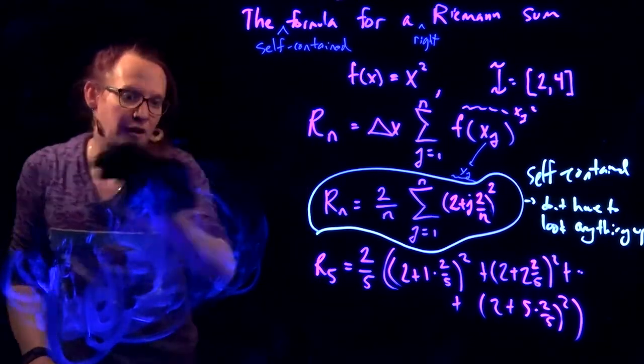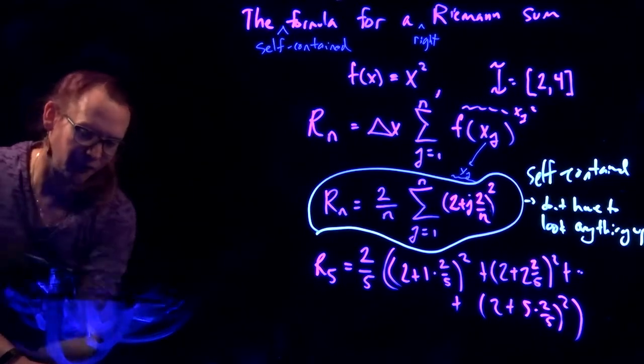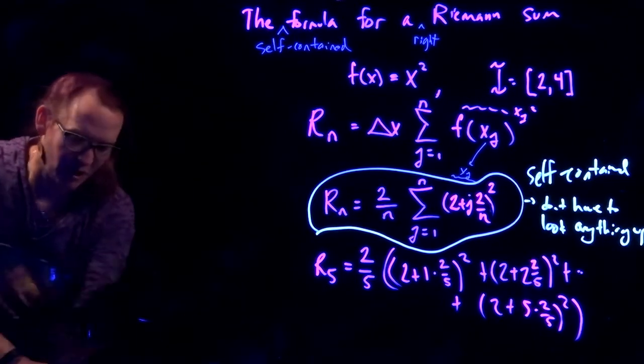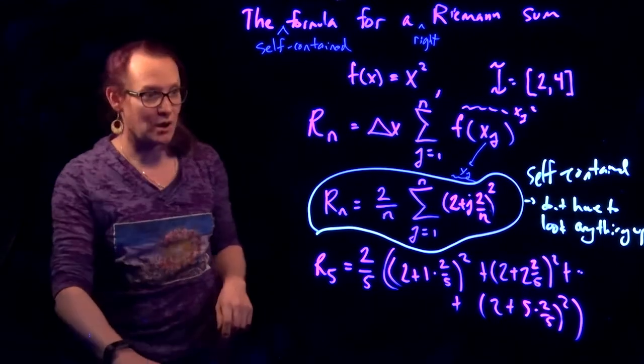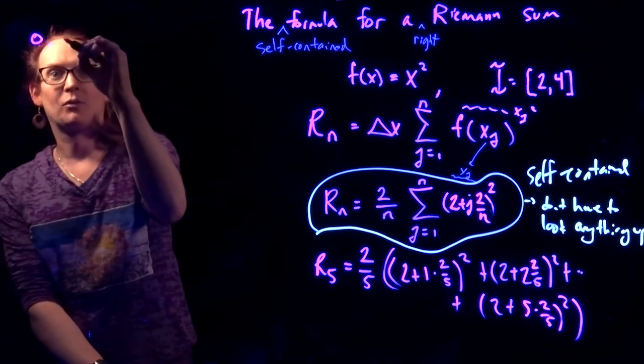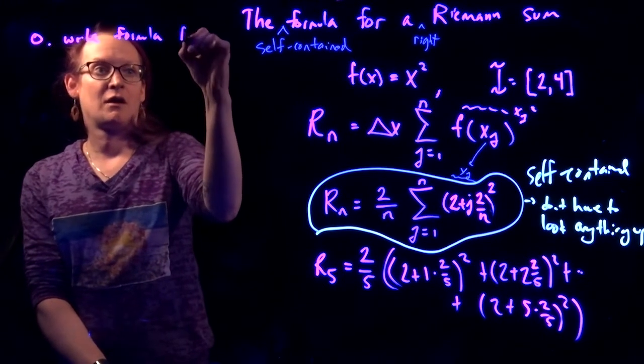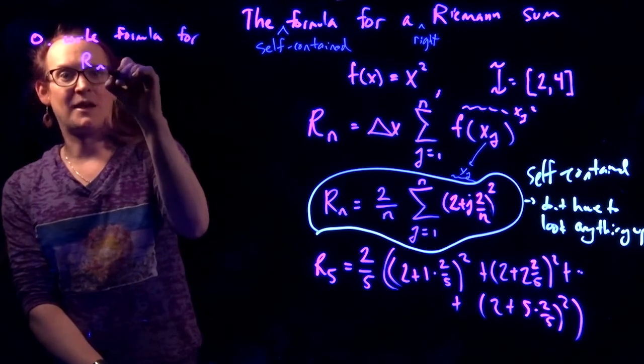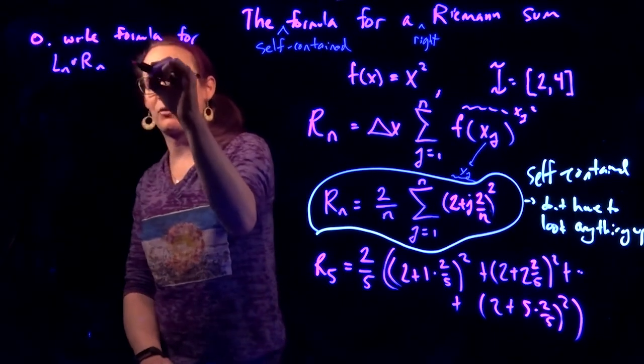So I feel like step 1 is write down the formula for the right or left Riemann sum abstractly. So we should just write down the formula as kind of like step 0, write the formula for R sub n or L sub n, abstractly.